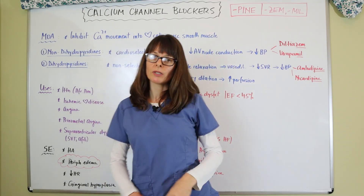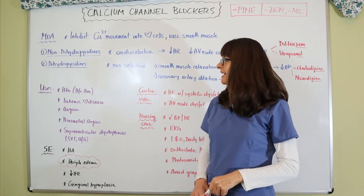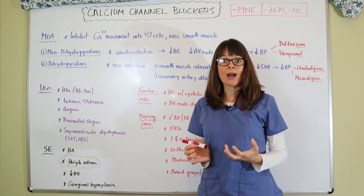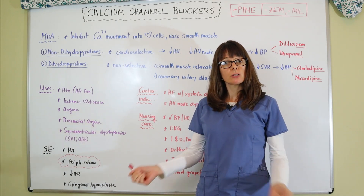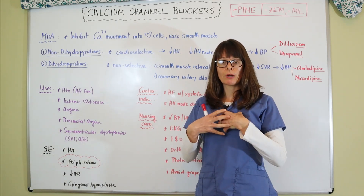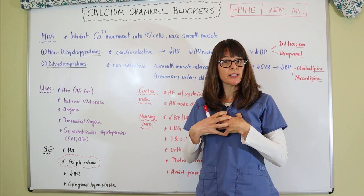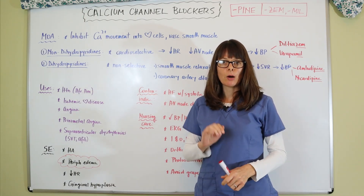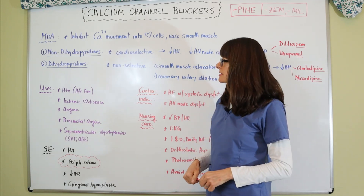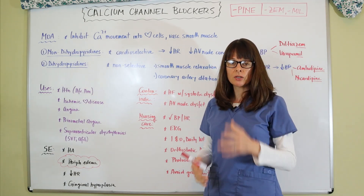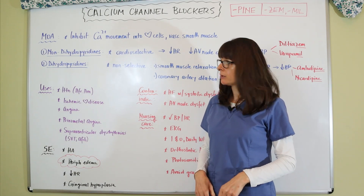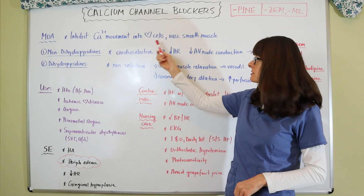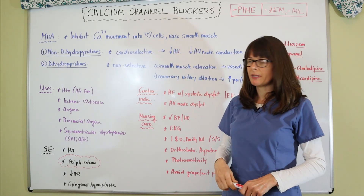For the mechanism of action, remember that calcium is needed for muscle contraction — that pertains to skeletal muscle, but here we focus more on cardiac muscle as well as vascular smooth muscle, with the influx and output of calcium ions. Calcium channel blockers block these calcium channels and therefore inhibit the calcium movement into the cardiac cells and the vascular smooth muscle cells.